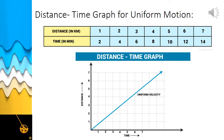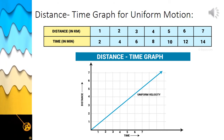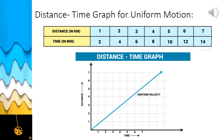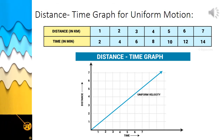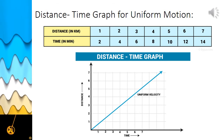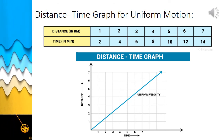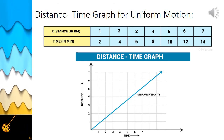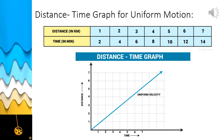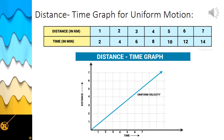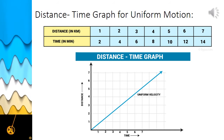The next step is to decide the scale. Here, one centimeter equals one minute on the X axis, and one centimeter equals one kilometer on the Y axis. Now mark the data points from the tabular form and join all the data points. You will find that you get a straight line representing the distance-time graph.